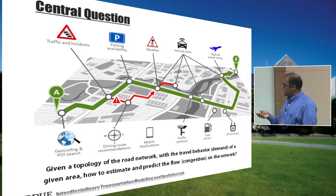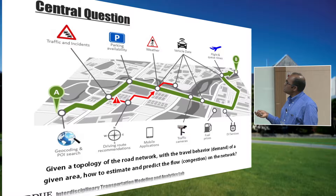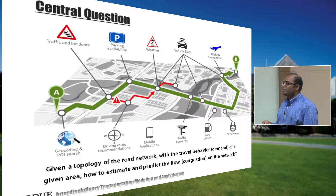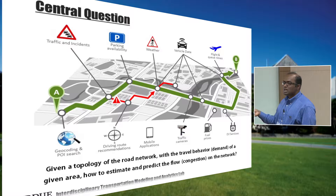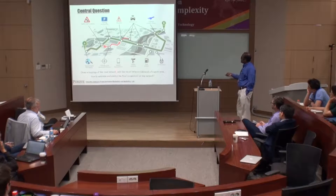What's the core question in transportation networks? Given a topological representation, we are given attributes and demand information, and we are primarily interested in knowing what is the flow on the transportation network — what's the congestion, the flow on each road, the travel time, when people are departing from home, where they make stops, what activities they participate in.